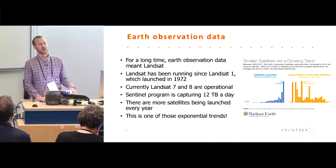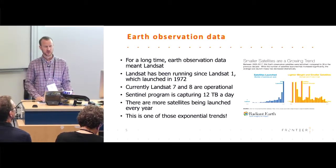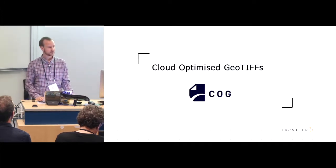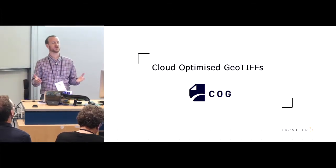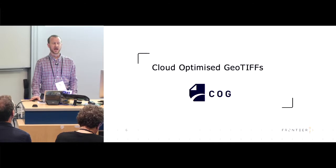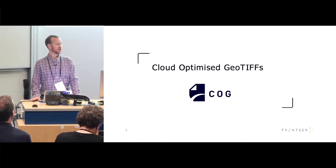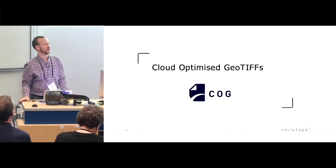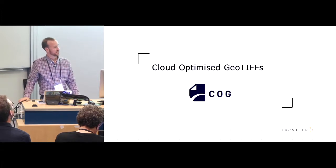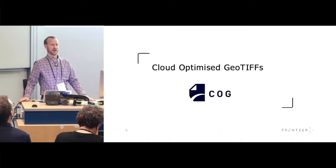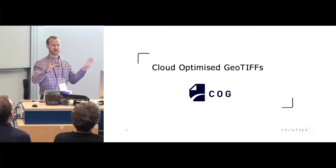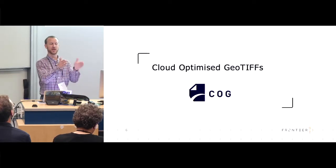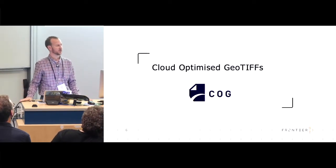We've got more data and we need to be able to access it more easily. One emerging paradigm is storing data in an object store like Amazon S3 or equivalents in Google Cloud or Alibaba Cloud. There's a part of the HTTP protocol called the get range request which lets you ask for just part of a file from a web server. Some clever people extended GeoTIFF in a backwards compatible way to add more to the headers and structure the data internally, so you can access just the parts of a GeoTIFF you want while it stays stored up on the cloud.